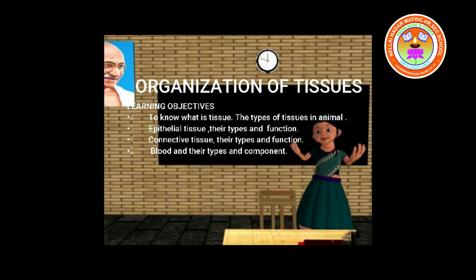Cuboidal epithelium is present in the kidneys and also lines the ducts of a few glands like the tear gland, salivary gland, and sweat gland. The lining of the kidney has just one layer of cells. It helps in absorption of waste material from blood to excrete them out of the body. Simple cuboidal epithelium filters blood for toxic substances. The ducts of sweat and salivary glands have two layers to protect the ducts from damage — this is stratified cuboidal epithelium.